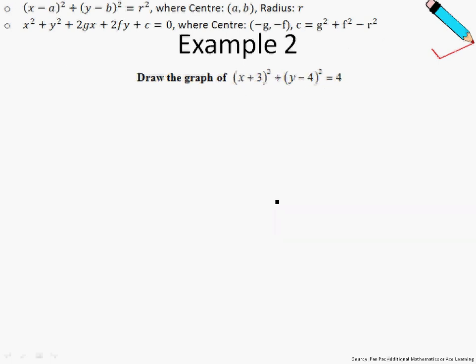Let's move on to another similar example. We are asked to draw this graph. And similarly, we're going to identify my a, my b, and my r. So a is negative 3. Why is that so? Because this equation can be expressed in the form x minus minus 3 square plus y minus 4 square equals to 4, which is 2 square. So a is negative 3, b is 4, and r is just 2, because r square is 2 square.